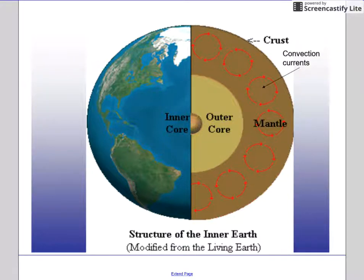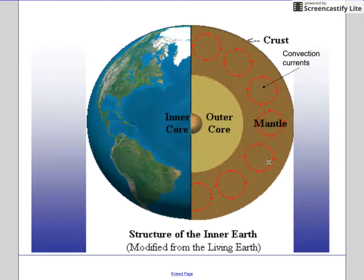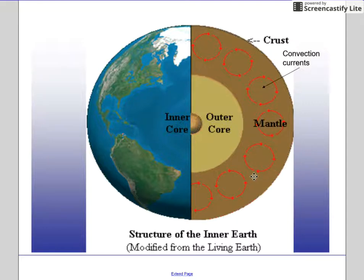The outer core is slightly fluid but definitely semi-solid. The mantle is very fluid. As materials in the mantle get cooler, they fall down toward the outer core, and as you go further into the geosphere, closer to the core, it gets hotter, and then the material rises back up to the surface — forming convection currents.